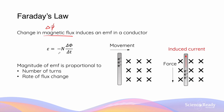This equation tells us that the magnitude of EMF is proportional to two things: the number of turns of the coil, and more importantly, the rate of flux change that the conductor is experiencing.